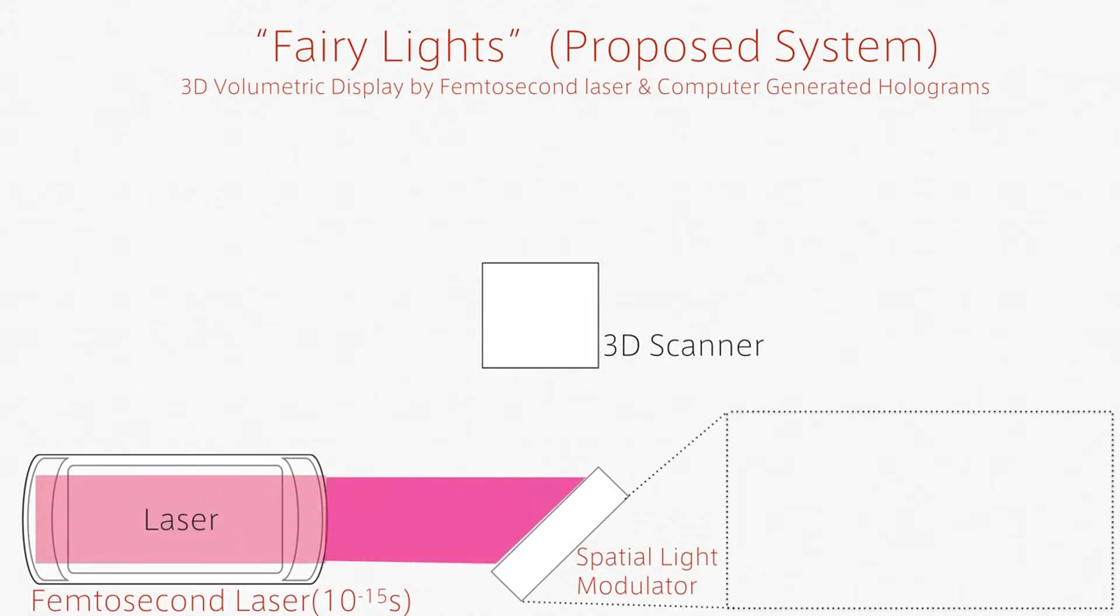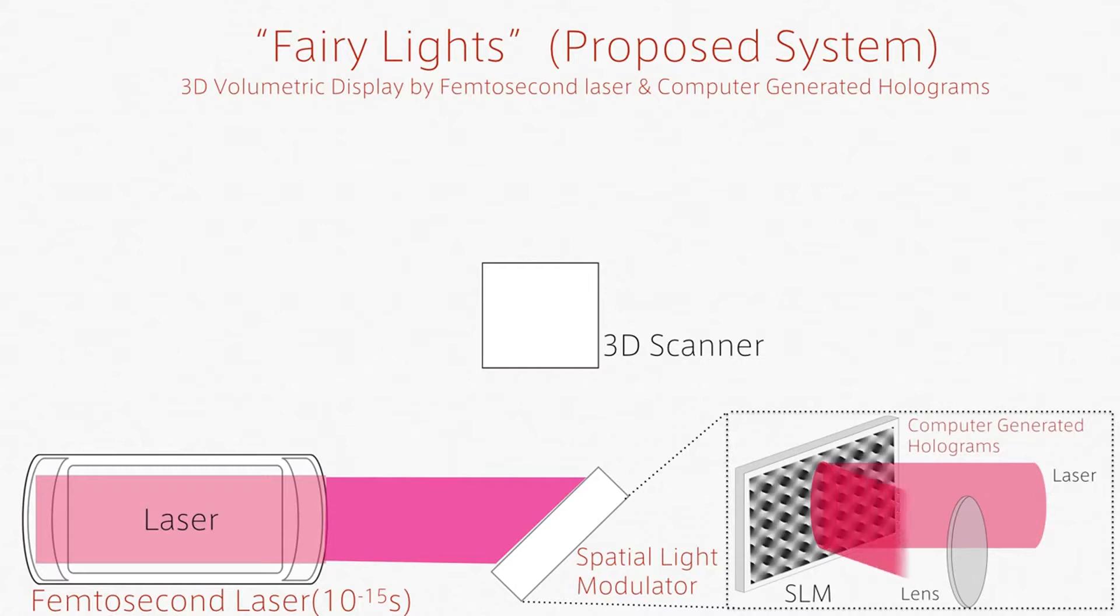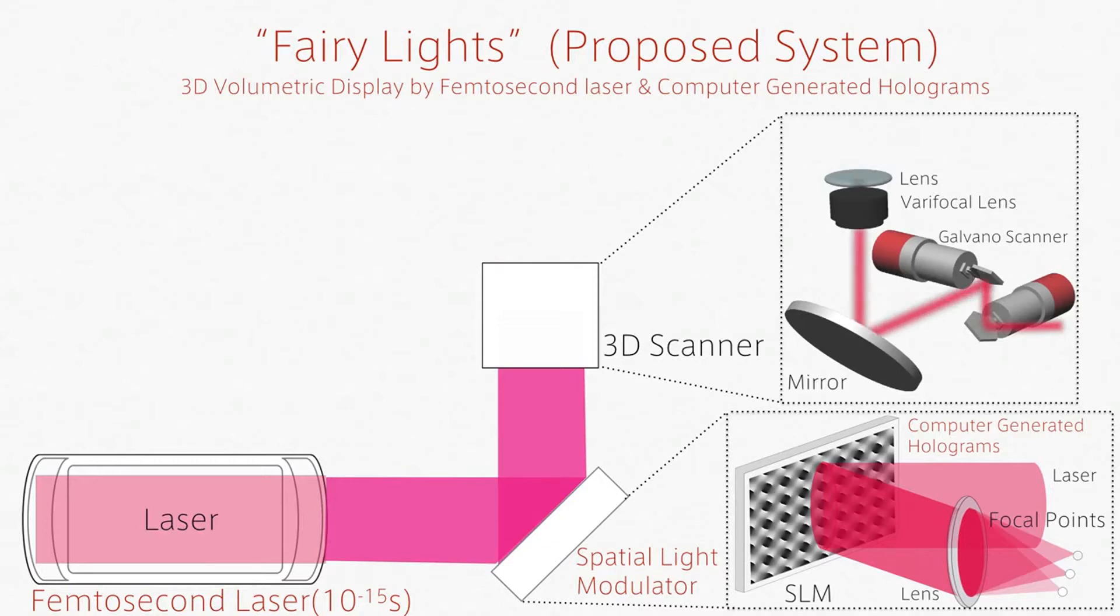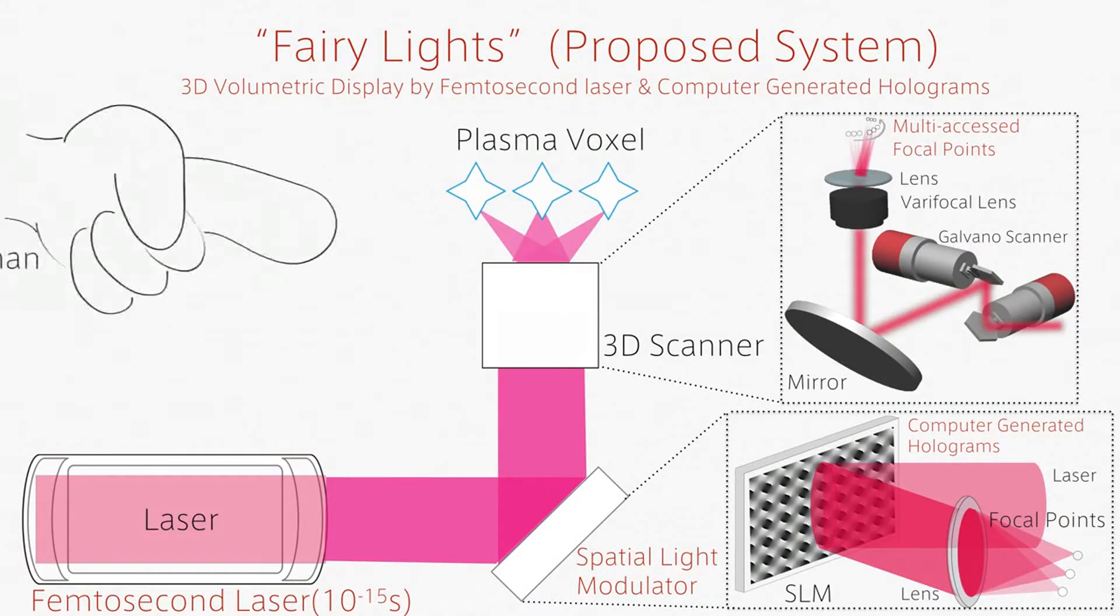We use an optical device called the Spatial Light Modulator to modify the phases of light rays and produce various spatial distributions of light based on interference. Our results lead to calmer and safer plasma generation that can be incorporated into our daily lives.